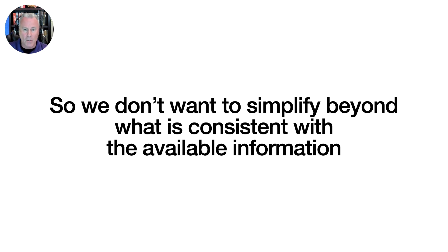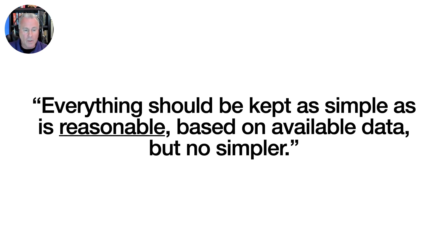This process is the essence of scientific inquiry, and is at the core of the development of scientific theories and how and why they often change over time. So, with all that in mind, here is my slightly updated version of the abbreviated principle: everything should be kept as simple as is reasonable, based on available data, but no simpler. This is, in a nutshell, the approach that we are going to use in developing structural equation models in general, and in particular the current path model that we are looking at in these two lecture videos.